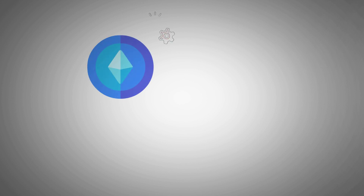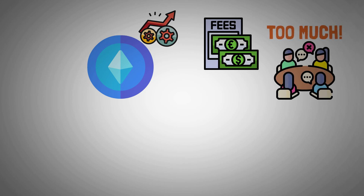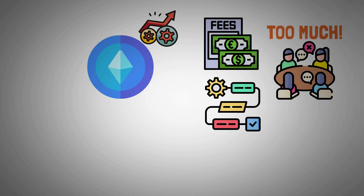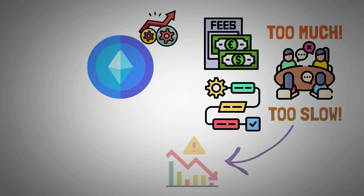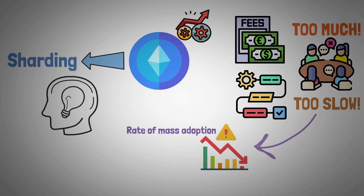Even with last Ethereum upgrades, the cost of fees still continues to be prohibitive for many, and throughput is not at the required level, which slows the rate of mass adoption. Ethereum has designated sharding as the long-term solution to this problem.